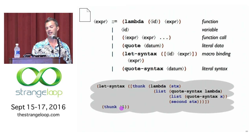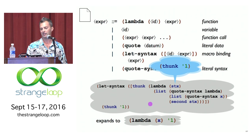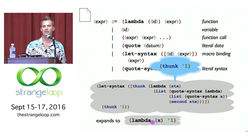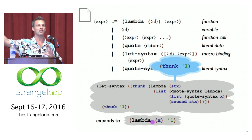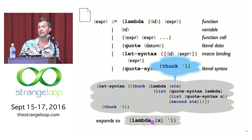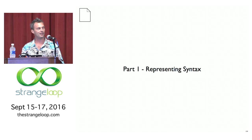Here's a thunk macro that has an expression but doesn't evaluate it — it just wraps it in an extra lambda wrapper. The thunk of one goes in as the argument stx. The code uses second of stx to pull out the one and puts it together with a lambda and a quote-syntax, ending up with the expansion. This gives a simple approach with no pattern matching — just functions that manipulate syntax objects to implement macros. You can build the rest up in terms of macros.